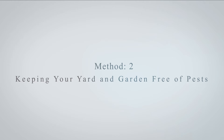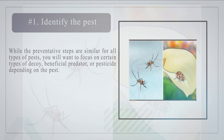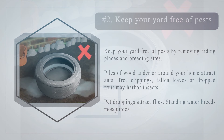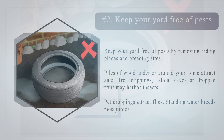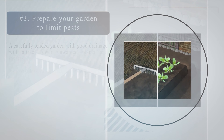Method two: keeping your yard and garden free of pests. Number one: identify the pest. While preventative steps are similar for all types of pests, you will want to focus on certain types of decoys, beneficial predators, or pesticides depending on the pest. Number two: keep your yard free of pests by removing hiding places and breeding sites. Piles of wood attract ants, tree clippings and fallen leaves may harbor insects, pet droppings attract flies, and standing water breeds mosquitoes.